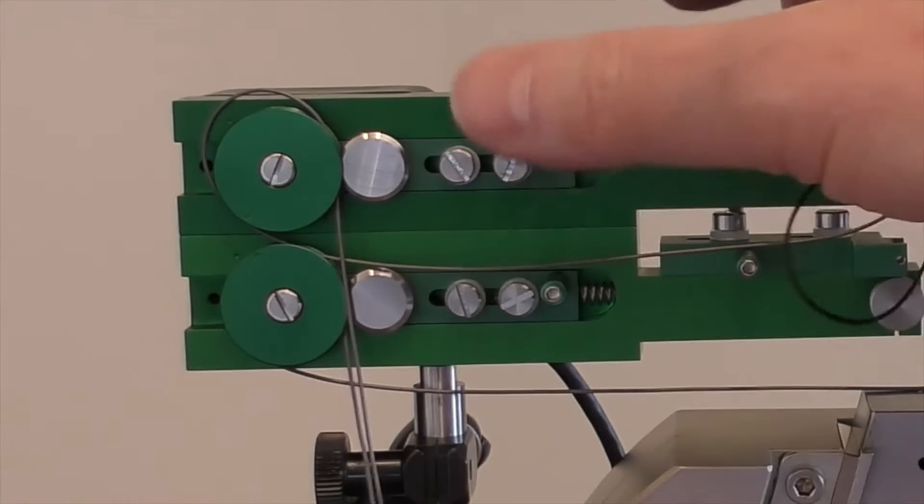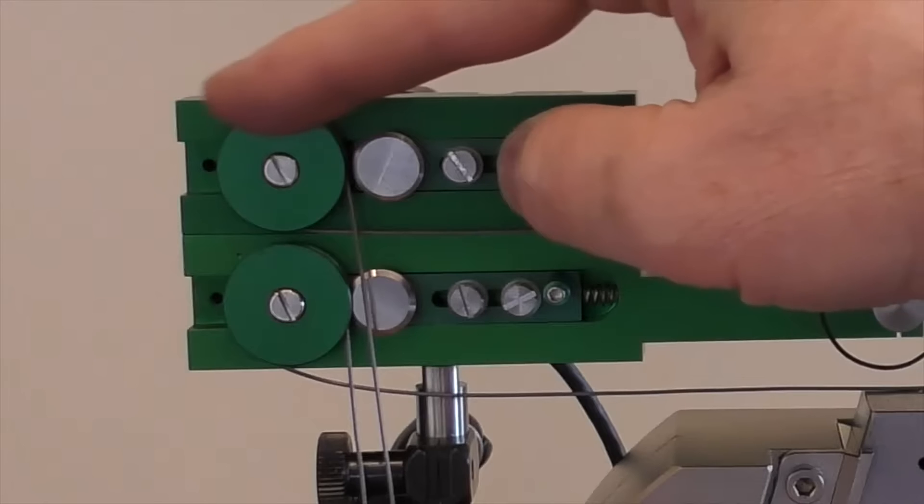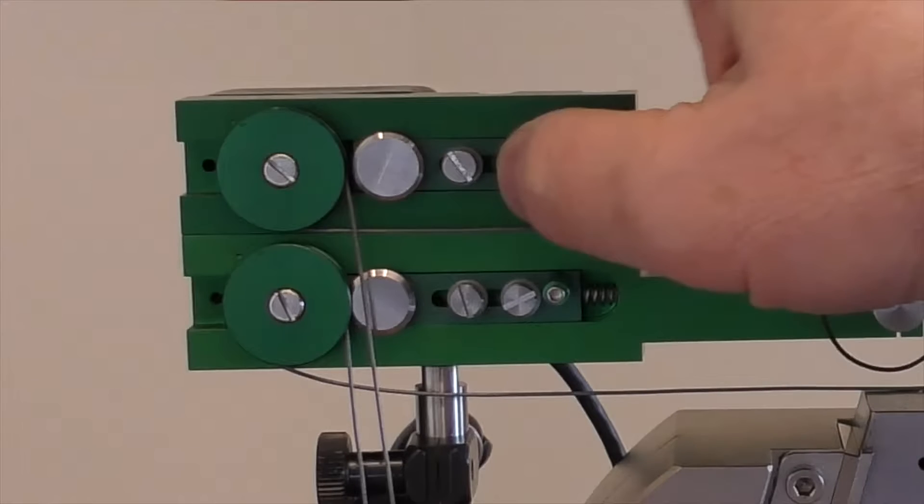Slide the pinch roller release handle to retract the pinch roller from the main roller. Rotate the main roller clockwise until it stops, then counterclockwise until the starting position mark on the main roller aligns with the mark on the extensometer's body.